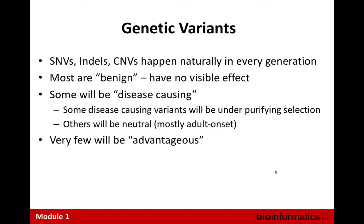Very broadly, talking about genetic variants — single nucleotide variants, indels, CNVs — they happen naturally in every single generation. Every generation that's born has some number of variants that weren't present in the previous one. For single nucleotide variants, it's ballpark around a hundred, give or take — it depends a lot on the father's age. Most of these variants will do absolutely nothing; they're benign and don't contribute to any disease, or they cause small phenotypic differences.